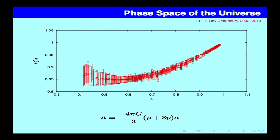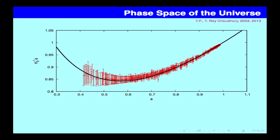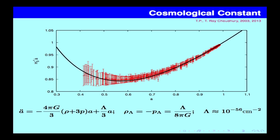The observations around the current epoch look something like this. These are the supernova data, presented as the phase space of the universe — the velocity Ȧ plotted against the coordinate A. The governing equation tells you that Ä is negative if ρ and P are both positive. But you can obviously see that Ä is not negative; it is increasing. So clearly ρ and P cannot both be positive. If you do a best fit and introduce some kind of negative pressure, the simplest choice is a cosmological constant. Lambda is the cosmological constant, which has dimensions of inverse length squared, of order 10⁻⁵⁶ cm⁻². This gives a nice fit to the accelerating universe. The universe is accelerating here, was decelerating at this phase, and the cosmological constant started dominating somewhere around the transition point.